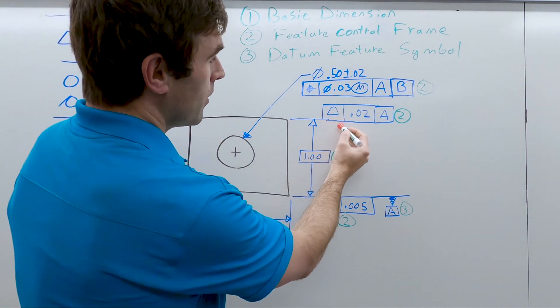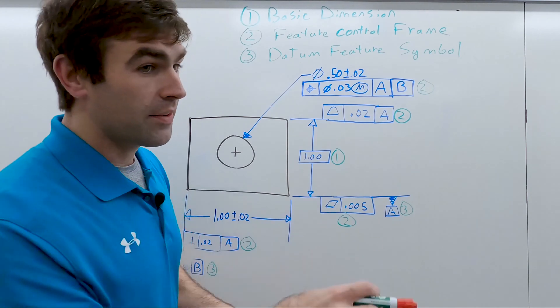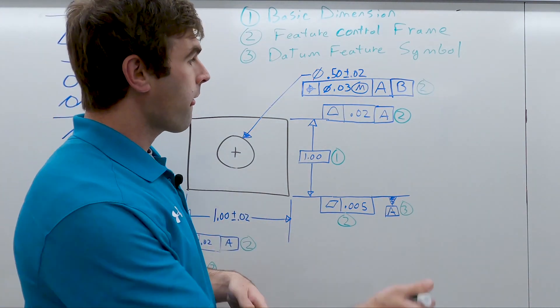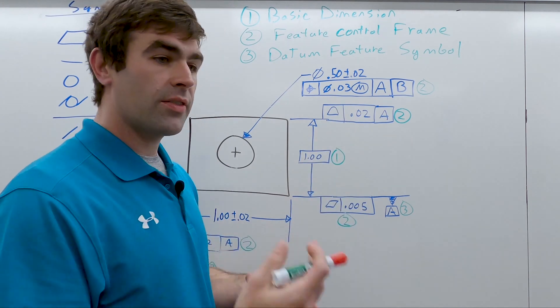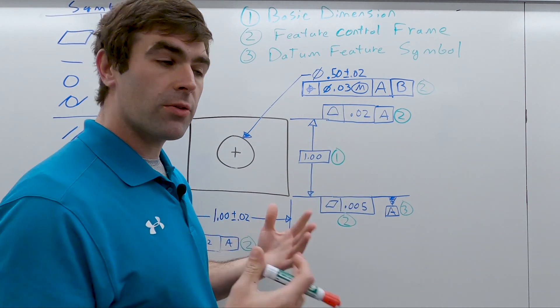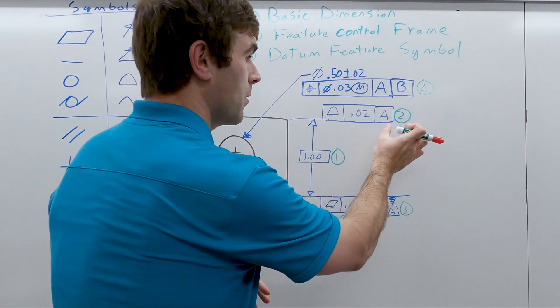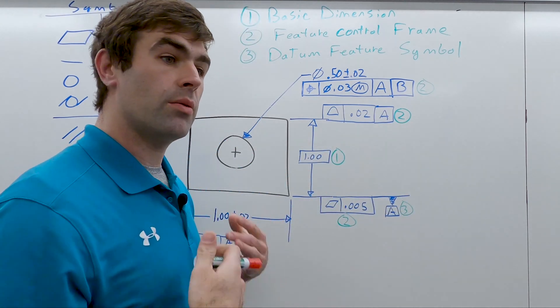So our feature control frame has a lot of stuff in it, and I'll go over that separately. But it's going to tell us what the tolerance is, what geometric characteristic it's dealing with, the amount of tolerance, and what datums it refers to.